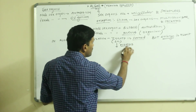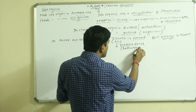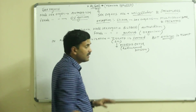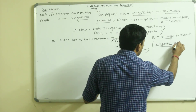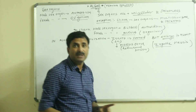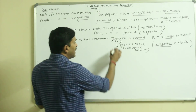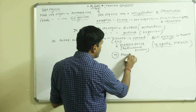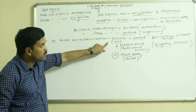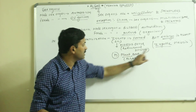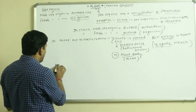In algae, in the zygote, meiosis occurs — this is called zygotic meiosis. Normally in a zygote mitosis occurs, but here in algae, zygotic meiosis occurs and as a result an n (haploid) plant body is formed. So the zygote never forms an embryo; instead, it undergoes zygotic meiosis and a haploid plant body is formed, which is the new plant body of the algae.